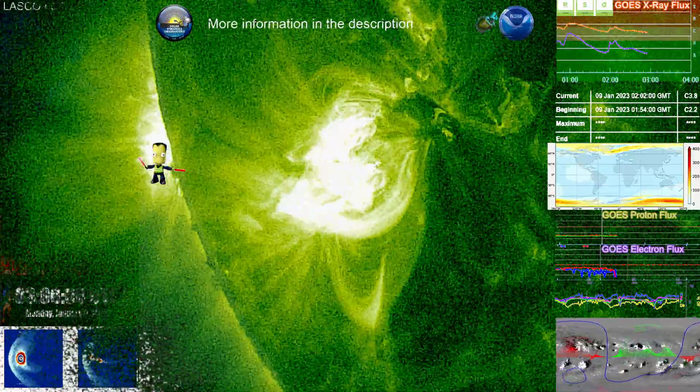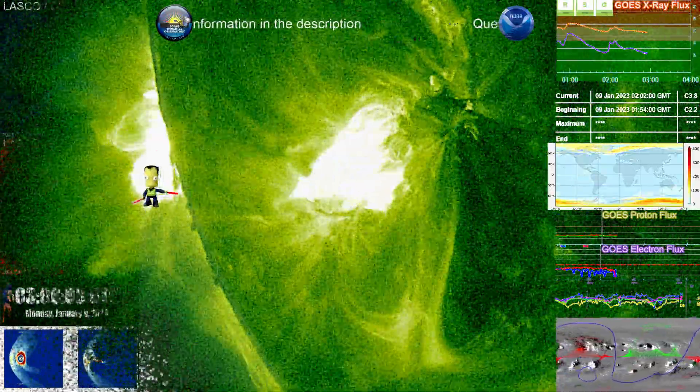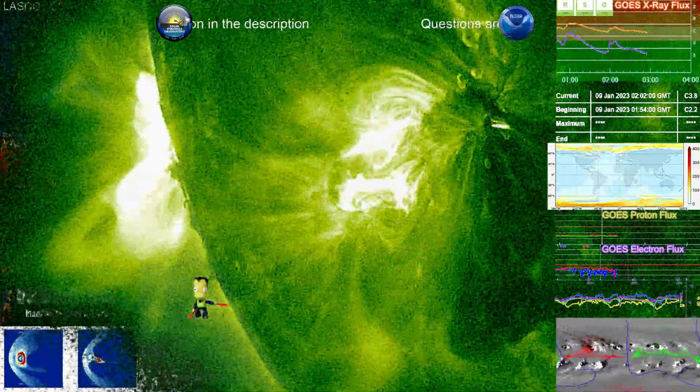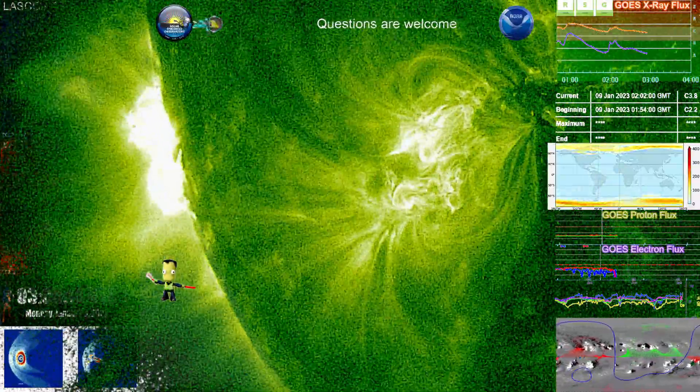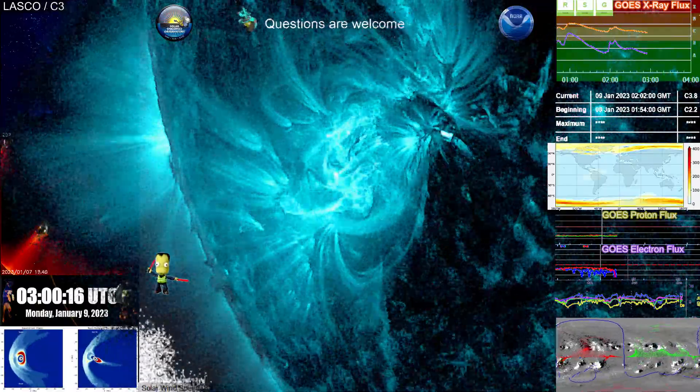And we can see a lot south of 3084, a lot of coronal mass ejections occurring here, both pre and post flare activity.